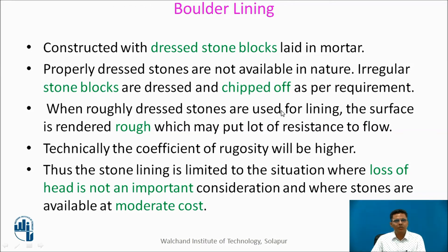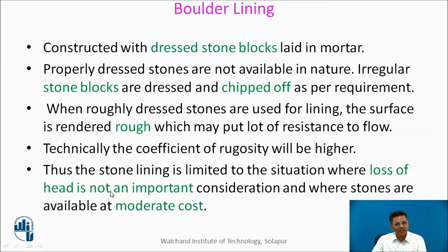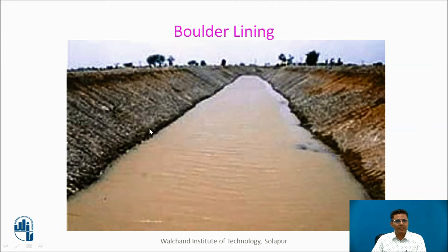Another form of hard lining is boulder lining — dressed stone blocks laid in mortar. Properly dressed stones are not naturally available, so irregular stone blocks are dressed and chipped as required. When roughly dressed stones are used, the surface is rough and puts a lot of resistance to flow — technically, the coefficient of rugosity will be much higher. Thus, stone lining is limited to situations where loss of head is not an important consideration and where stones are available at moderate cost. This image shows boulder lining as discussed.